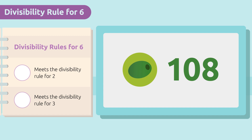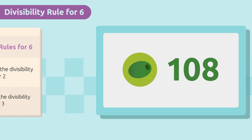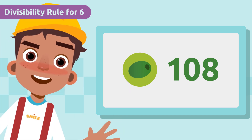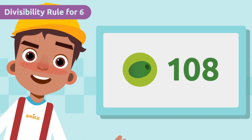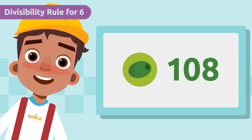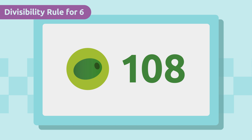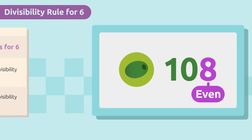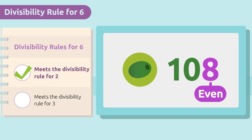Let's start with the rule of two. As Windsor explained, to apply the divisibility rule of two we have to check if the last digit is even. Our number ends in 8, which is an even number, so the rule of two is met!